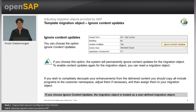Note that if you choose this option, the system will permanently ignore content updates for this migration object. The migration object is treated as a user-defined migration object. If you want to enable content updates again for this migration object, you can reset the migration object. Additionally, if you want to decouple your migration object permanently from content updates, you should copy all includes to the customer namespace and assign these custom includes.